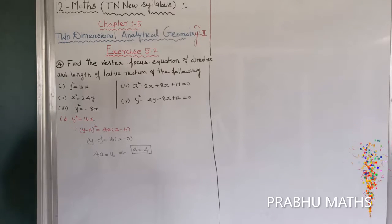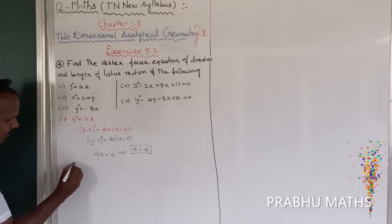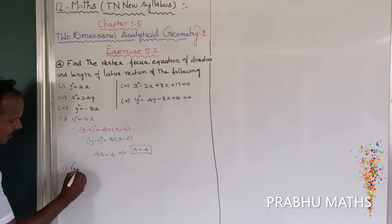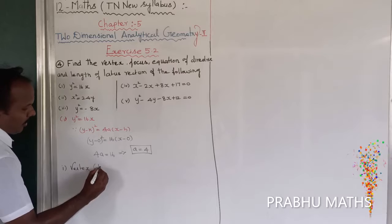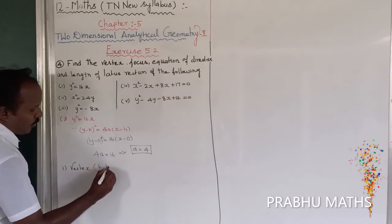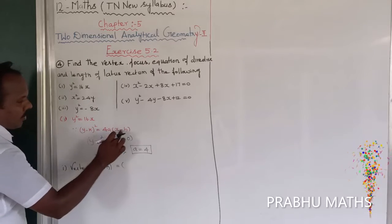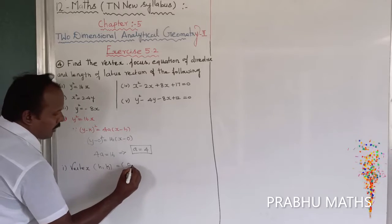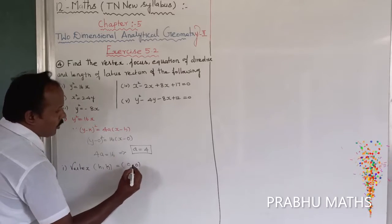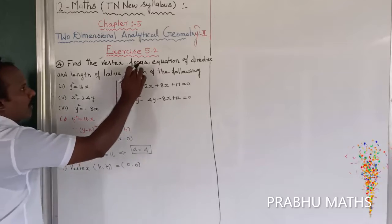Next, find the vertex. The vertex is given by h comma k. Comparing with the general form, h is equal to 0 and k is equal to 0. So the vertex is 0 comma 0. Vertex is completed.